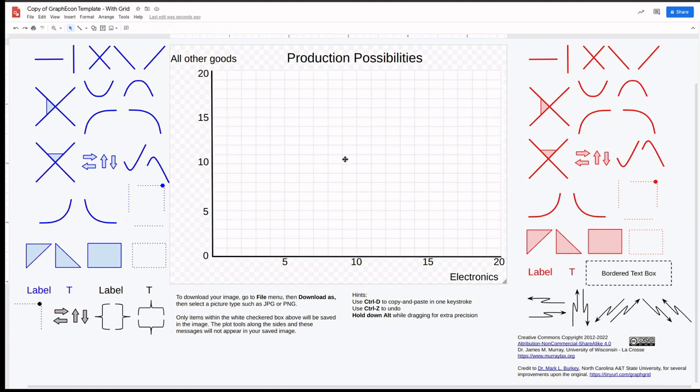The Production Possibilities Frontier is a bowed out curve, much like this shape right here. I can copy and paste this shape with Ctrl D, D for duplicate, and then drag that duplicate over. Let's have it go from here down to here. I can resize it as I want.